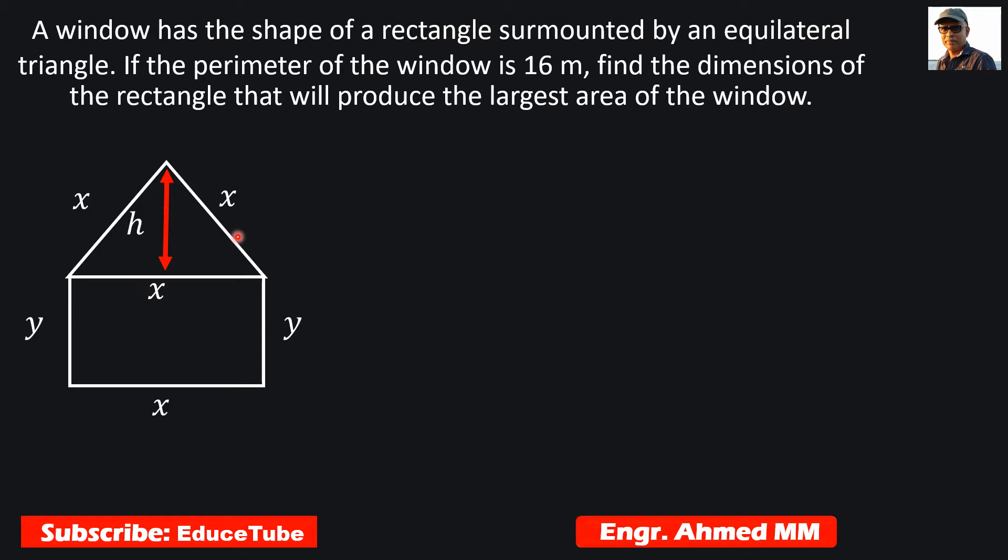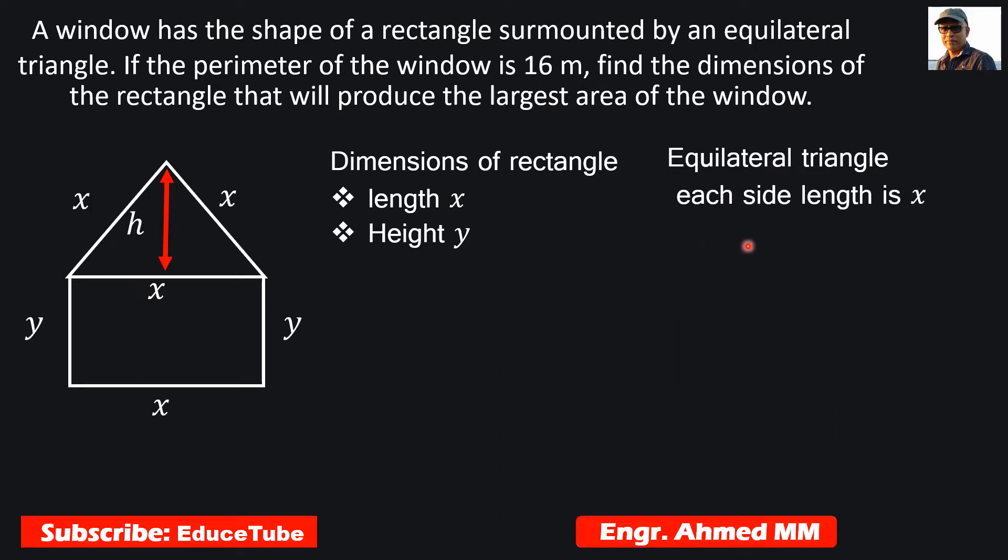So let's start. The dimensions of the rectangle are length x and height y, and the side of the equilateral triangle is x. Let's find first the height of this triangle using Pythagorean theorem as square root of 3 over 2 times x.